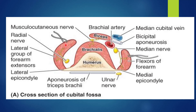Laterally we can see the lateral group of forearm extensors, and here the brachioradialis is present. In the floor we can see the brachialis muscle. The bicipital aponeurosis and the biceps muscle form the roof of the cubital fossa.